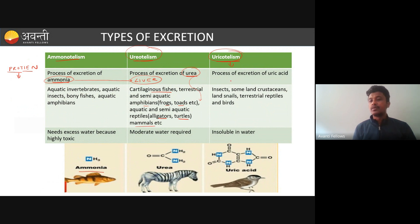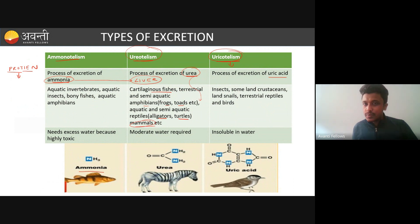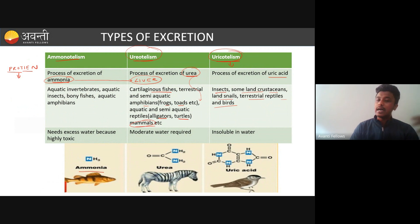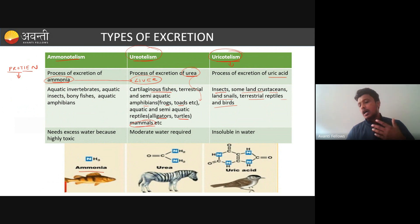The third type is uricotelism — excretion of uric acid. Examples include insects, some land crustaceans like crabs, land snails, terrestrial reptiles, and birds. These organisms convert ammonia into uric acid in the liver. You can see the white slime that birds excrete — it is rich in uric acid. The same mechanism applies: ammonia is converted to uric acid in the liver and then excreted.